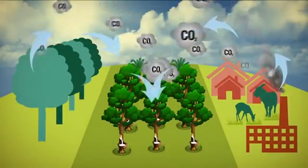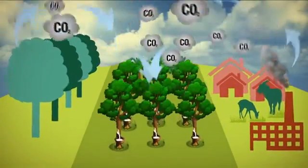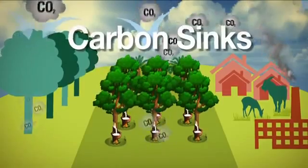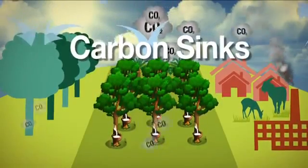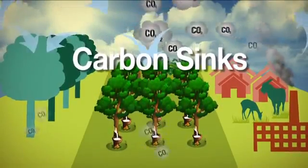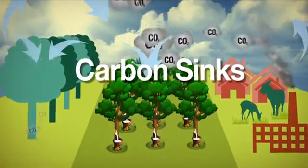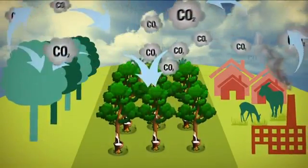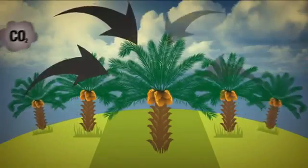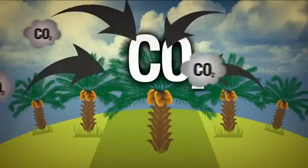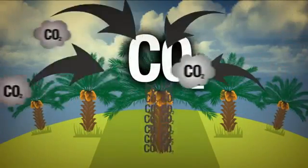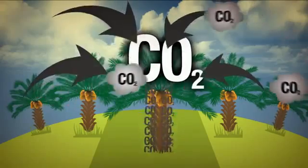Plantation tree crops are also carbon sinks as they also absorb carbon. So when economic activities emit carbon, forests and plantation tree crops remove them. In Malaysia, oil palm plantations are plantation crops, and they are able to remove carbon.